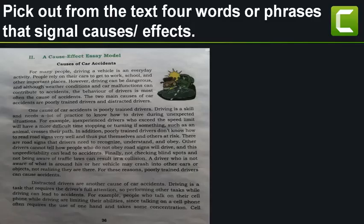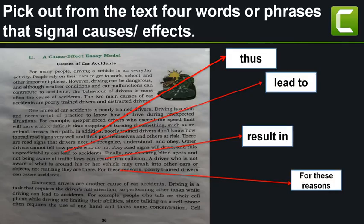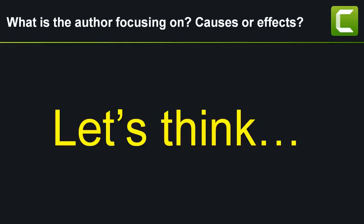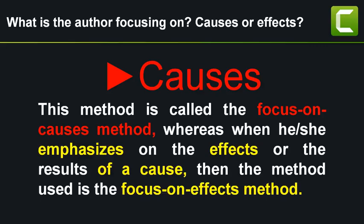Pick out words or phrases that signal causes or effects. Some examples are: thus, lead to, result in, and for this reason. The writer is focusing on the causes — this method is called the focus on causes method. When the writer emphasizes the effects or results of a cause, the method used is the focus on effects method.